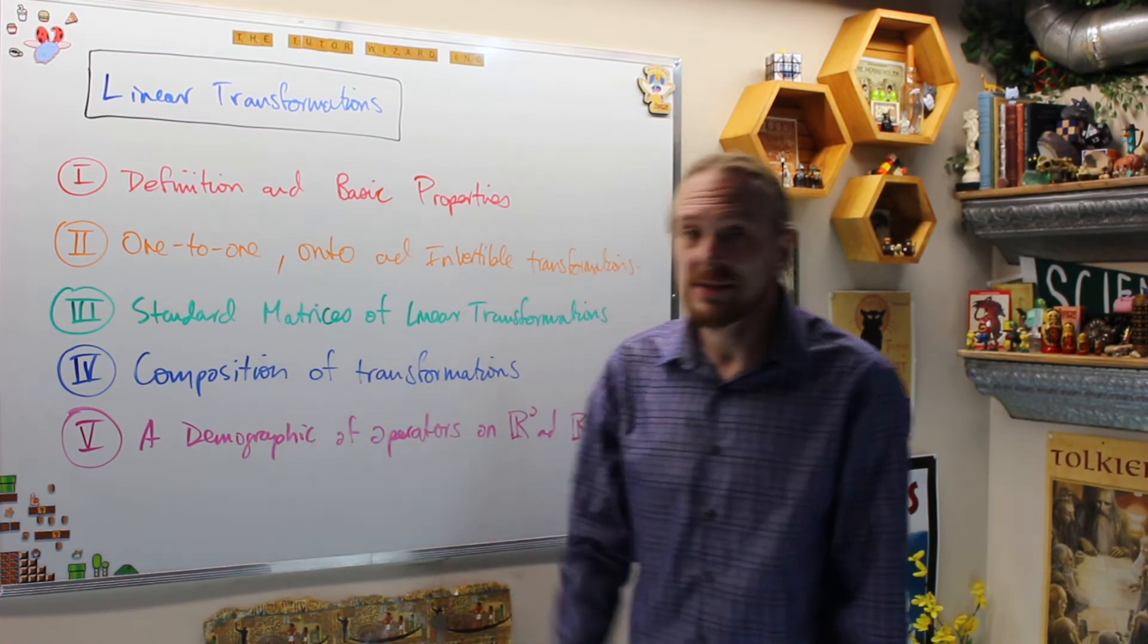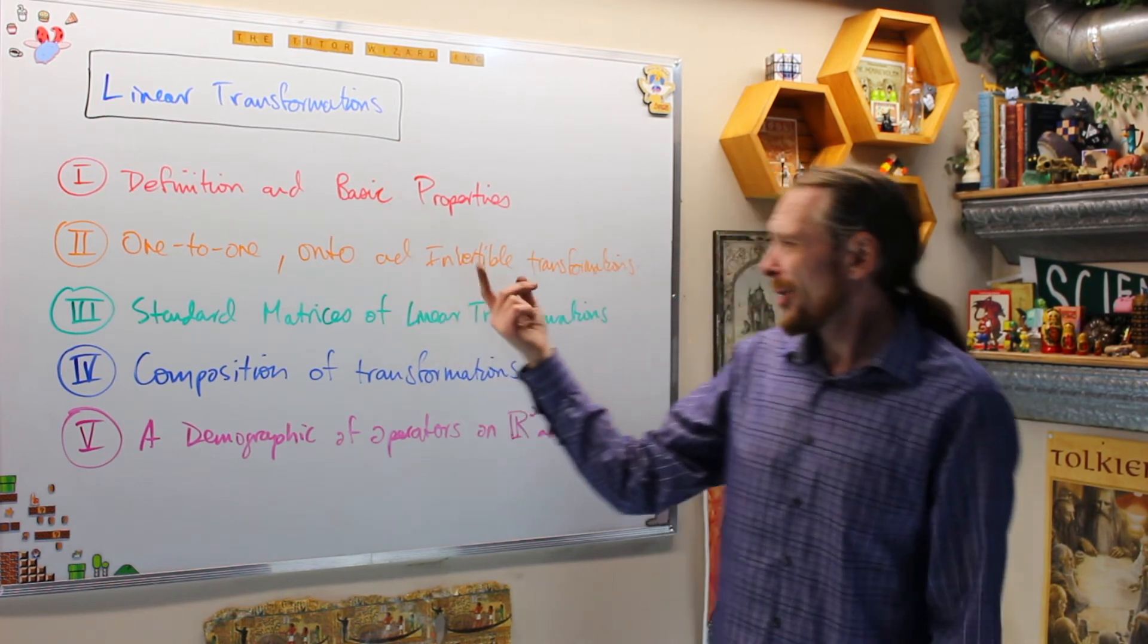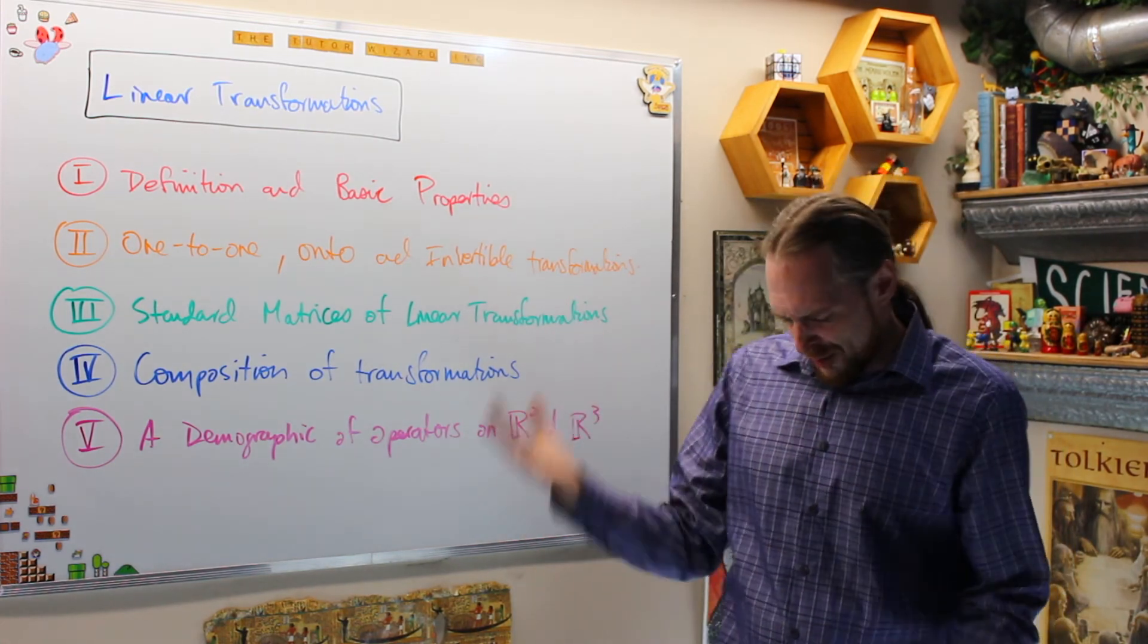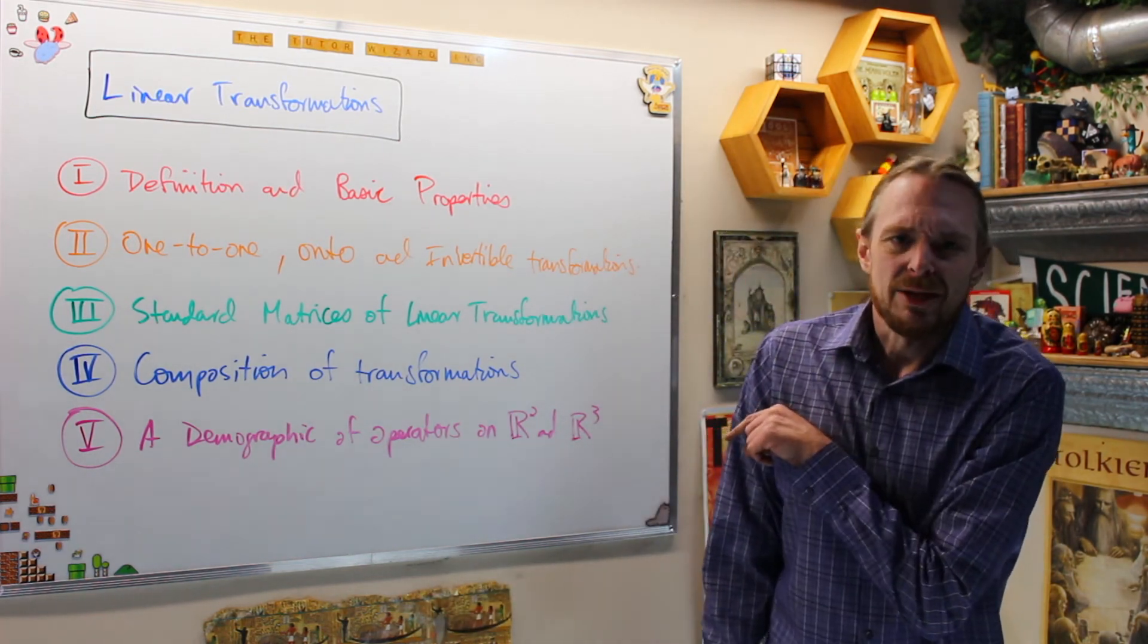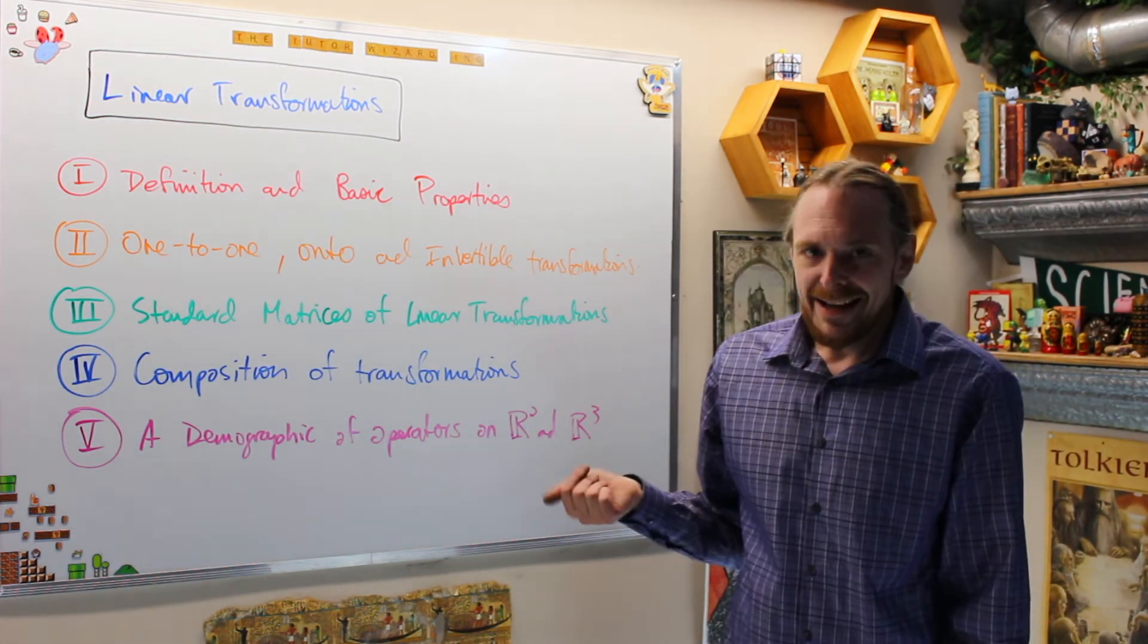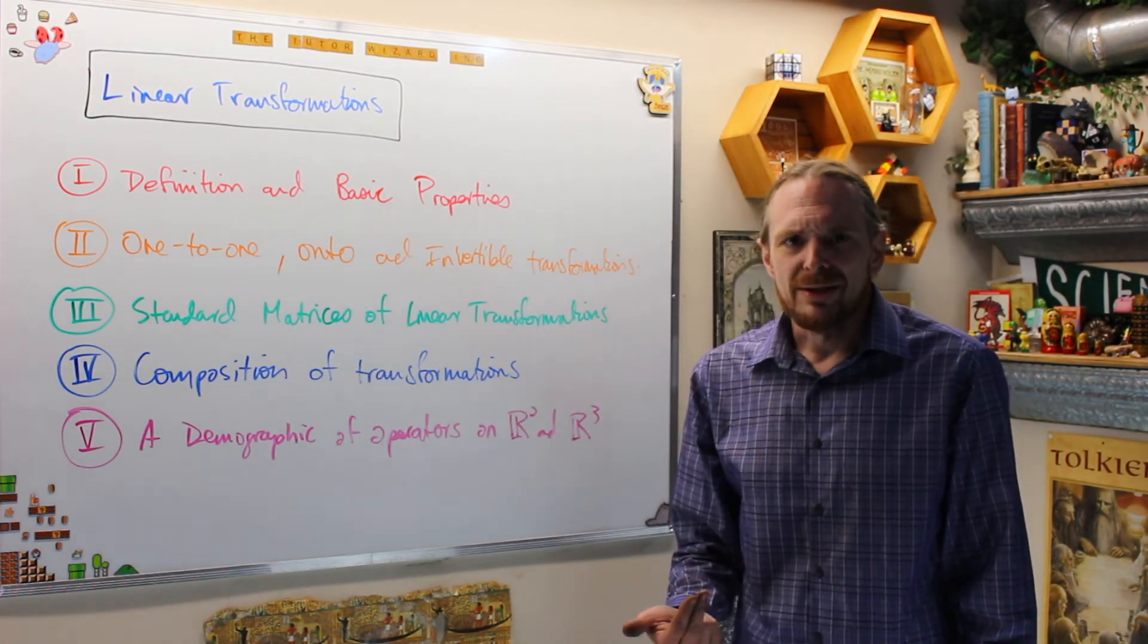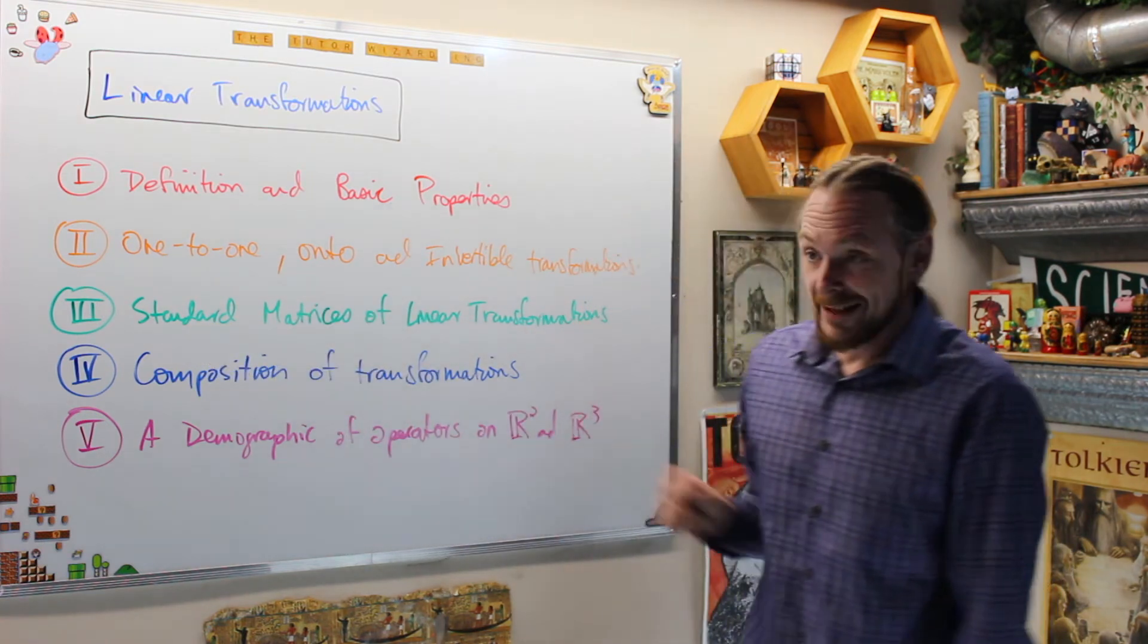Chapter four is going to be linear transformations. We'll do, as we always do, the basic definitions and properties. Then we're going to do one-to-one onto an invertible transformations. This is one that's a little bit more complicated section. Then what we're going to do is show that every... These are the same objects essentially, which is weird at first, but we're going to get into the fact that there's a standard matrix for every linear transformation. If you have a transformation that is linear, you can describe that as matrix multiplication on the left by a matrix. And if you have a matrix, you just define that transformation to be the multiplication on the left by the matrix, and you can define a linear transformation. So linear transformations and n-by-n matrices are the same object essentially. So we'll get into that in that section.